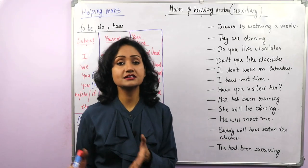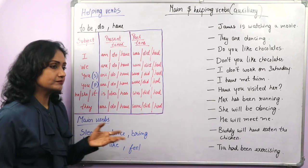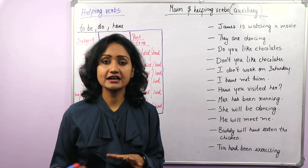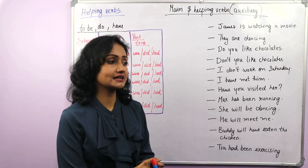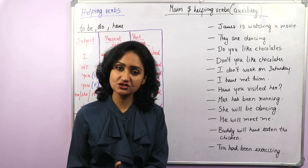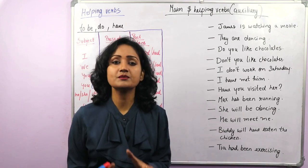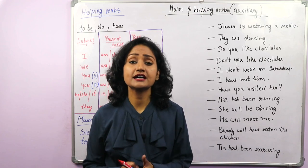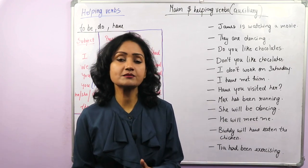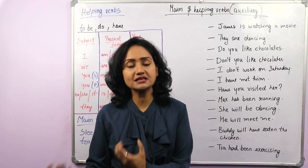Let's start with main and helping verbs. Main verbs are the verbs which describe an action or state. Dynamic verbs describe an action and stative verbs describe a state — they both are main verbs. Main verbs are very important and they can stand alone, but sometimes they need a helping verb to complete a sentence or to give meaning to the sentence.